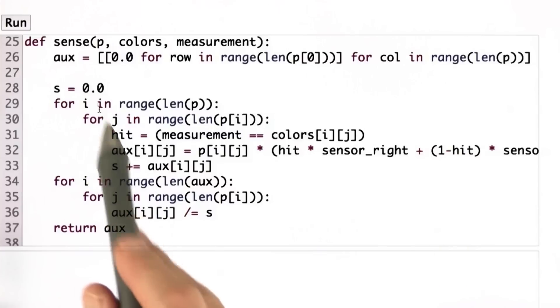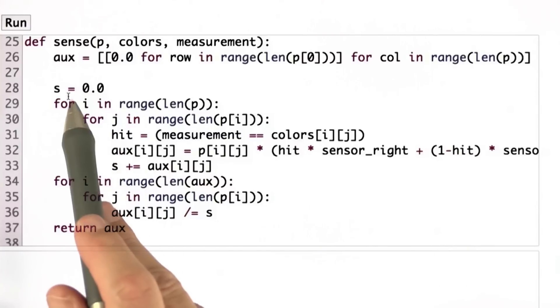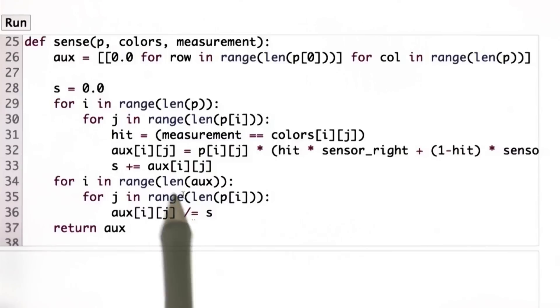Finally, I add up all the values in aux. I do this with the variable s. So down here, I can normalize aux to have a total probability of 1. And then I return it.